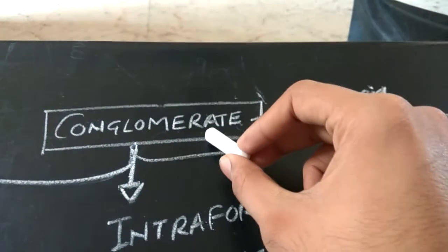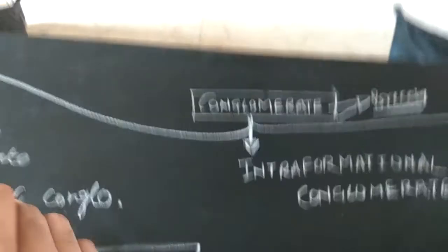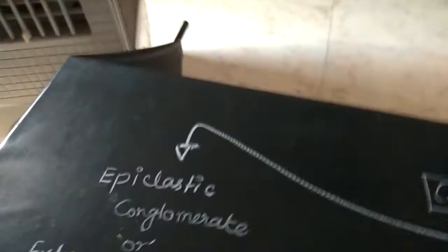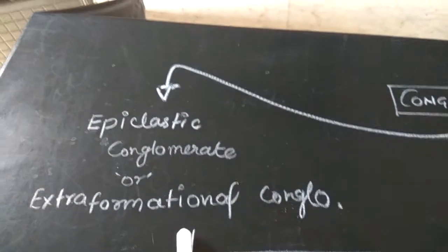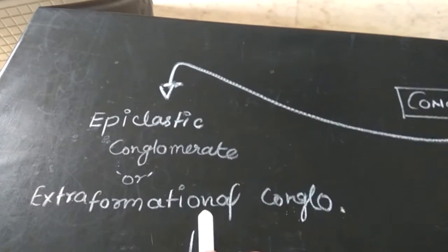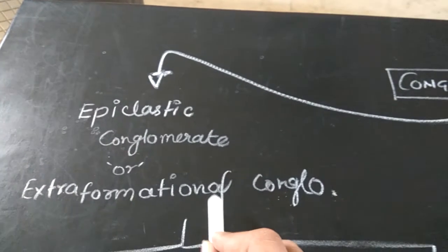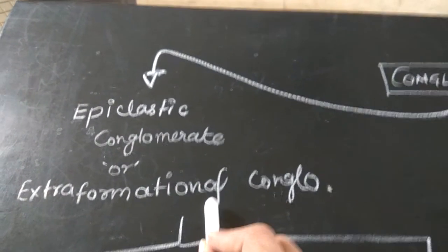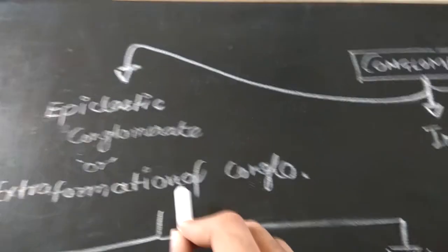For the classification of conglomerate, we consider three types. First is the epiclastic conglomerate, also called extraformational conglomerate. In this type, the clasts are derived from different basins rather than a single basin, meaning it is composed of heterogeneous clasts.